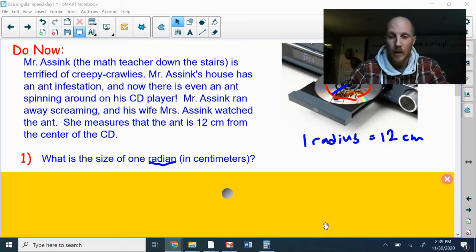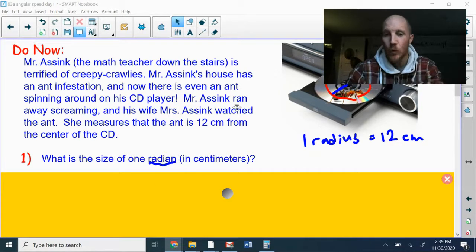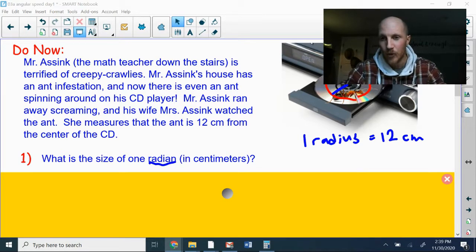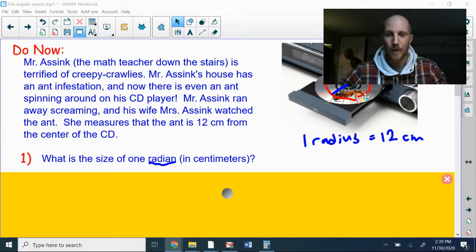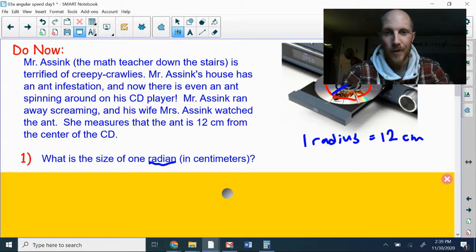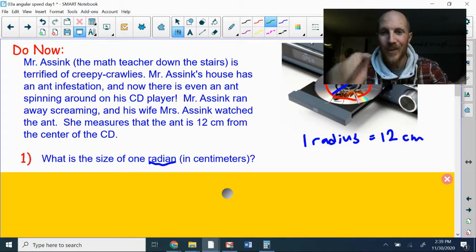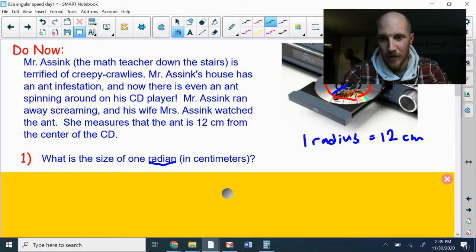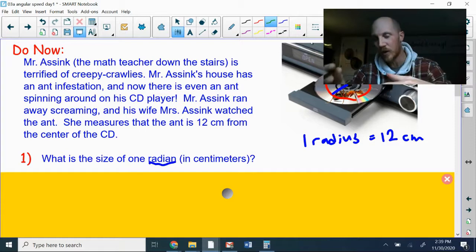So our first question here: what is the size of one radian? Okay, so as that ant goes around on the CD, it turns into a giant red blur making a circle. I've got the radius drawn on there—that's our 12 centimeters—and we know that a radius is the defined size of a radian.